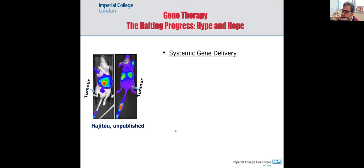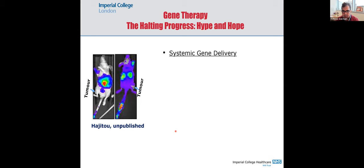Gene therapy has been around since the 60s but has not delivered the expected outcome. The main problem is systemic gene delivery. Successful gene therapy requires successful systemic delivery — intravenous, oral, intradermal — a system that allows gene expression everywhere in the body. For instance, 90% of cancer patients die because of metastases, and to treat metastases you cannot use local delivery; you need systemic administration. That's why they use chemotherapy.